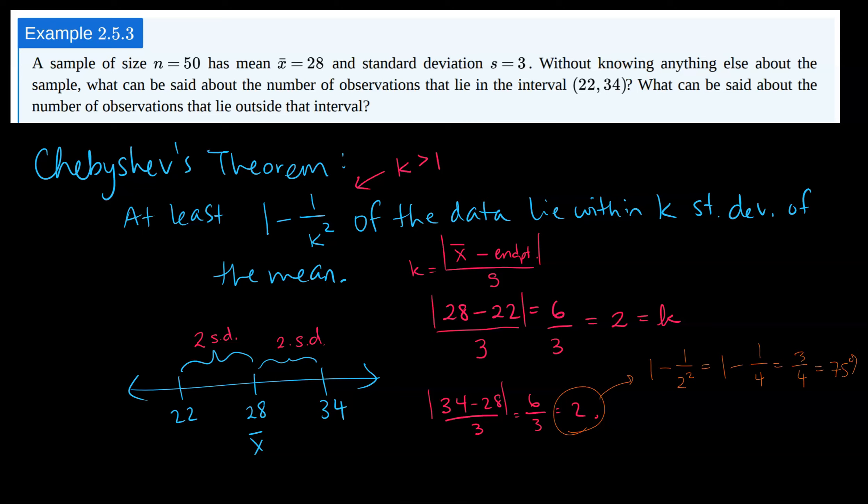which is 3 fourths, or 75%. I know 75% of the data will lie in the interval 22 to 34.